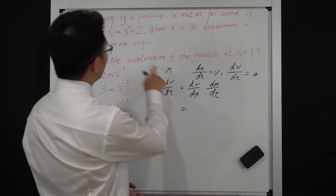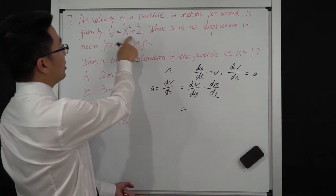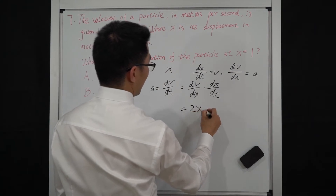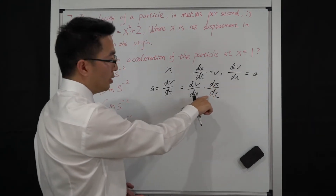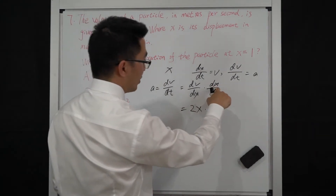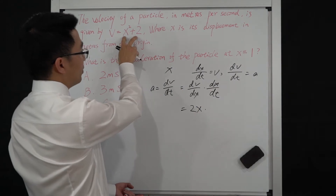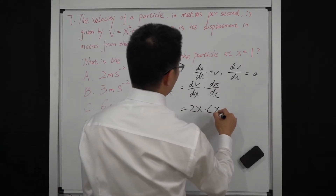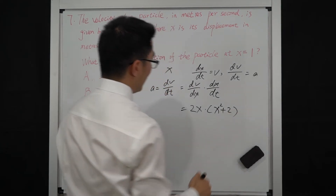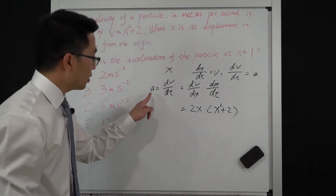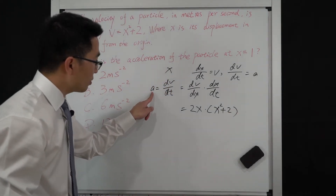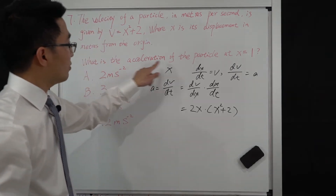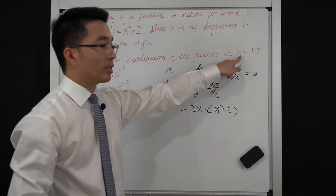The differential dv/dx of v = x² + 2 gives 2x. Then times dx/dt, which is just v, we bring v in to get x² + 2. So acceleration a equals 2x times (x² + 2).